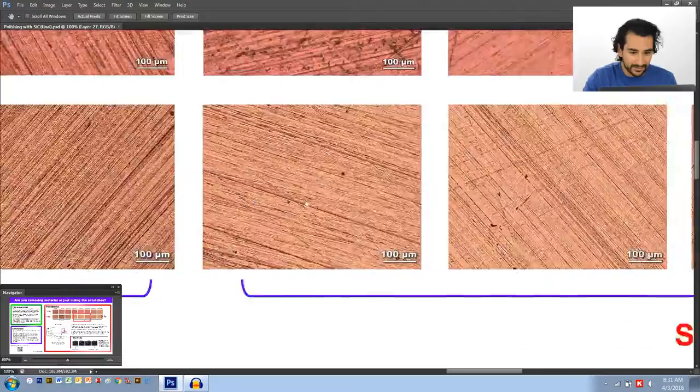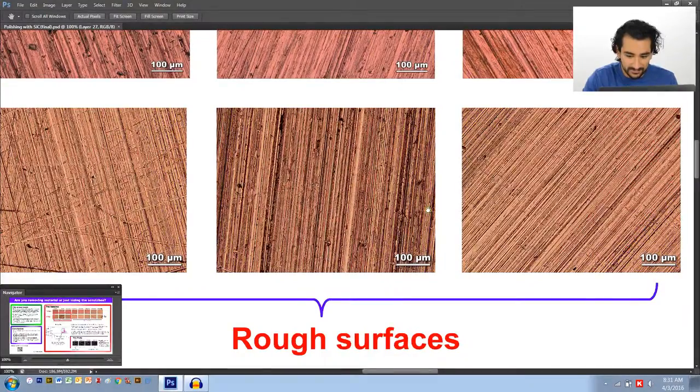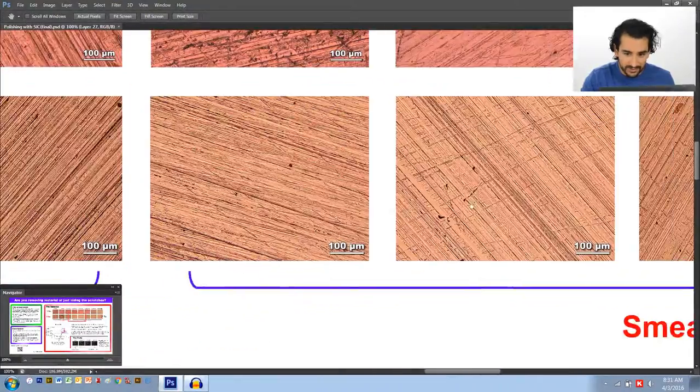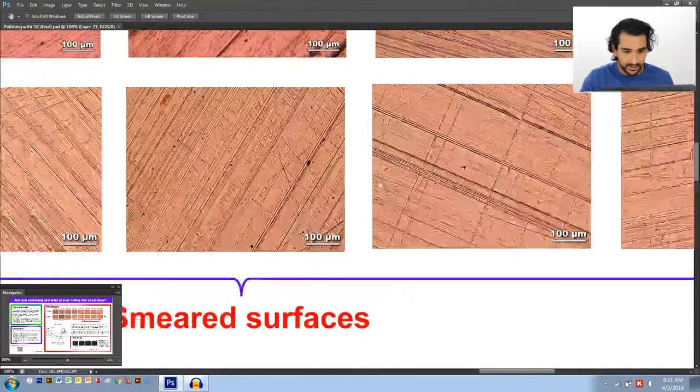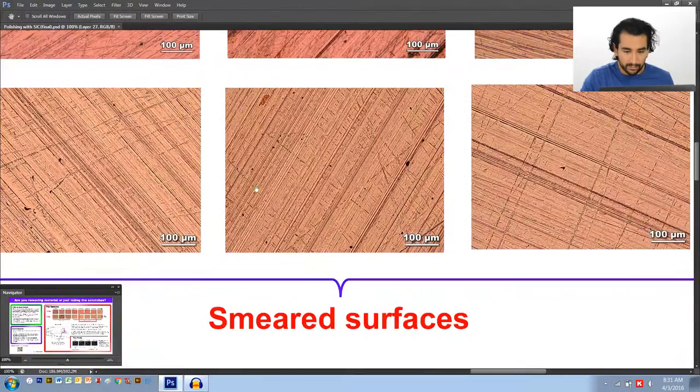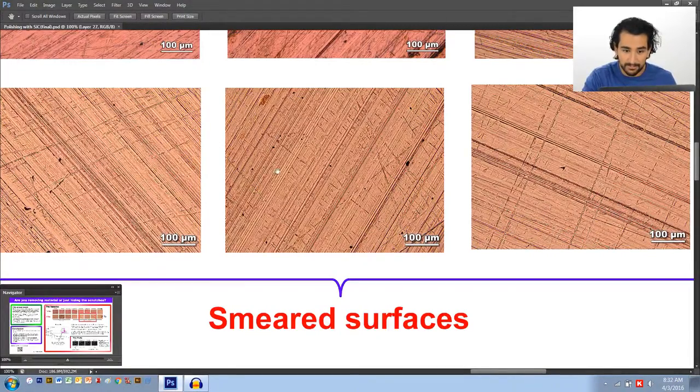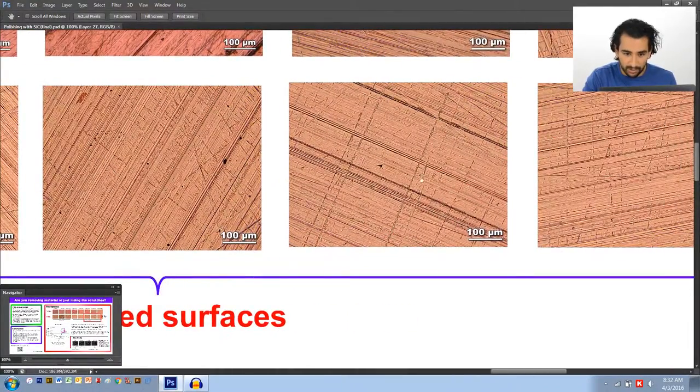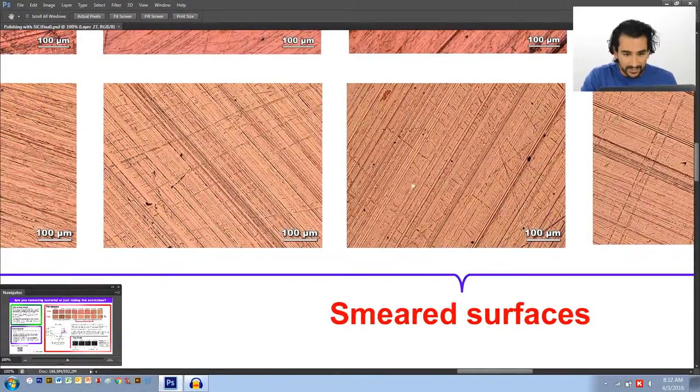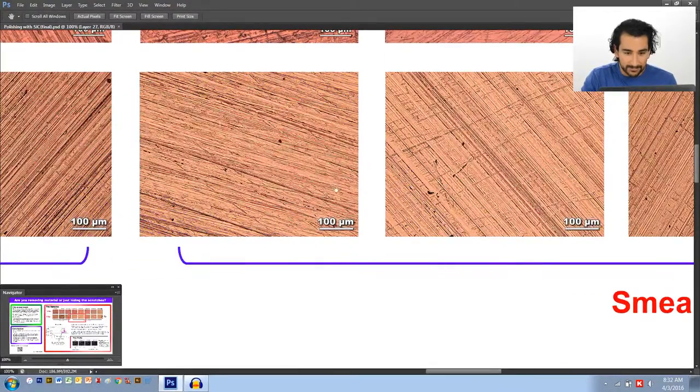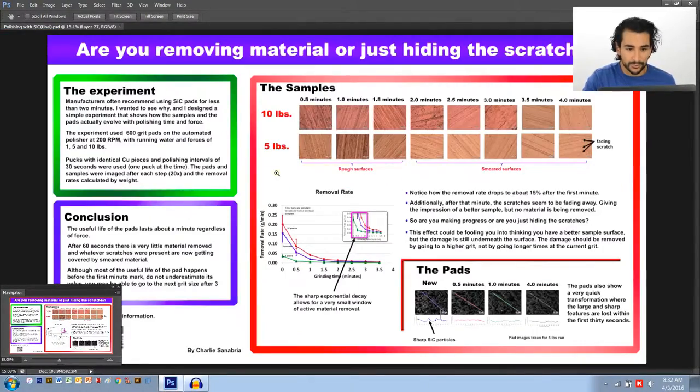If you're changing to a new pad after this, you'll just go back to this mess. So all the embellishing here that you did on the extra minute and a half or so is worthless. And if you think about it, well, the point of polishing, the point of step polishing is removing the damage from the previous scratches. It's removing material. So are you removing any material here? No. So don't waste your time. And I guess that's why the title is called, are you removing material or just hiding the scratches? Keep that in mind.